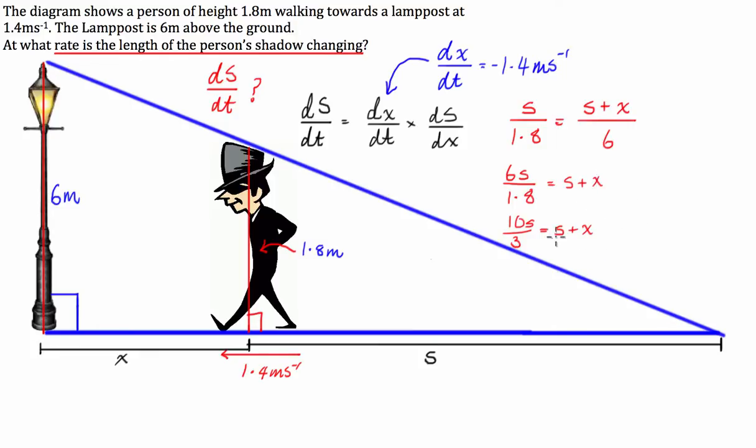So I'm going to have 10S over 3 minus S over 3, which expressed in thirds is 3S over 3, equals x. So that's going to be 7S over 3 equals x.